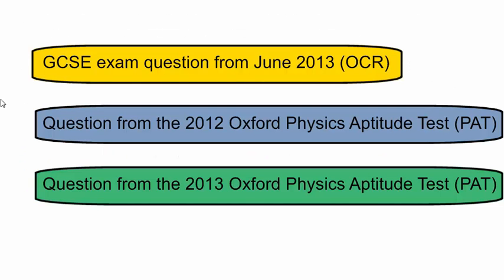If you'd like to learn how to solve some more challenging half-life problems, click on one of the buttons on your screen now. You can choose between a GCSE exam question from the OCR 21st Century Science Spec from June 2013, or a couple of questions from the Oxford Physics Aptitude Test, that's the entrance exam for Oxford University.